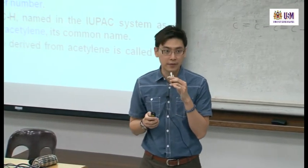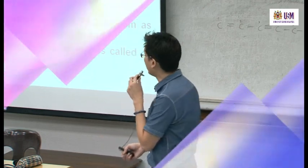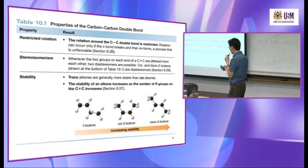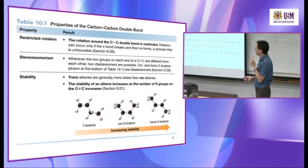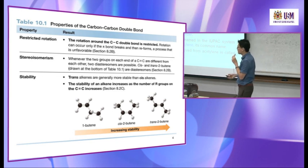The first unsaturated bond must get the lowest number. The simplest alkyne, acetylene, is named ethyne in the IUPAC system. The 2-carbon alkynyl group derived from acetylene is called an ethynyl group, sometimes used as a substituent.